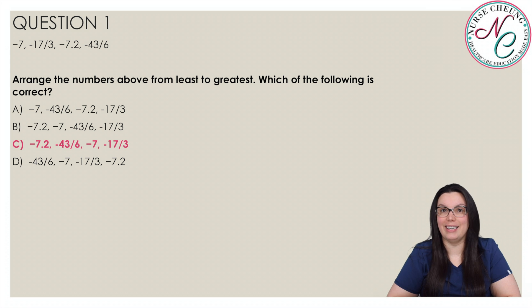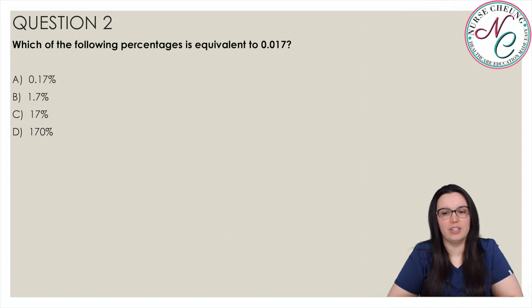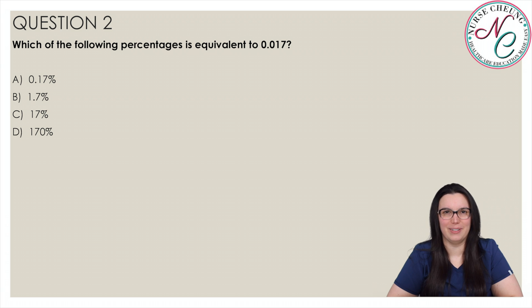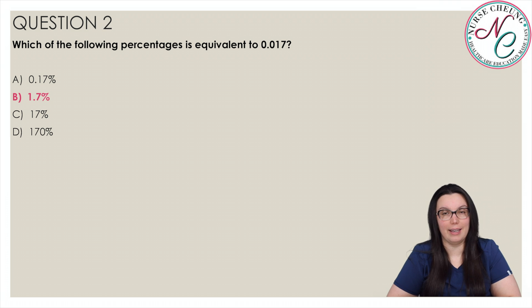The correct answer is negative 7.2, negative 43 over 6, negative 7, and negative 17 over 3. Question 2: Which of the following percentages is equivalent to 0.017? Is it A, 0.17%; B, 1.7%; C, 17%; or D, 170%? The correct answer is B, 1.7%. To convert a decimal to a percentage, we move the decimal point to the right two places, making 0.017 equal to 1.7%.